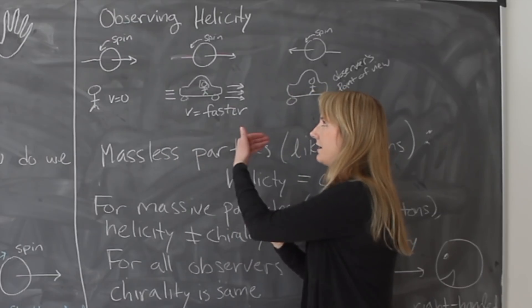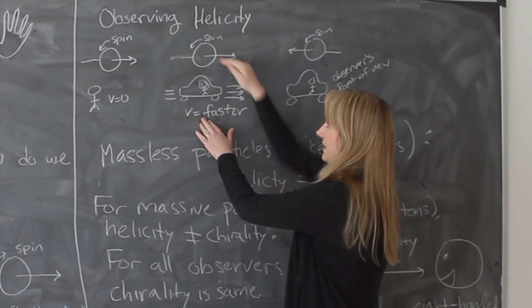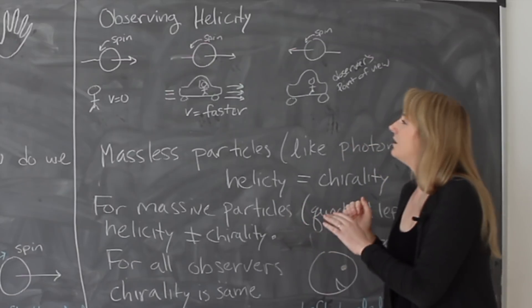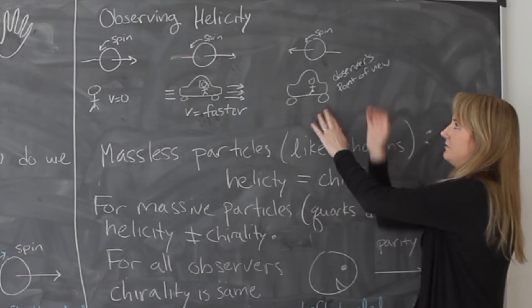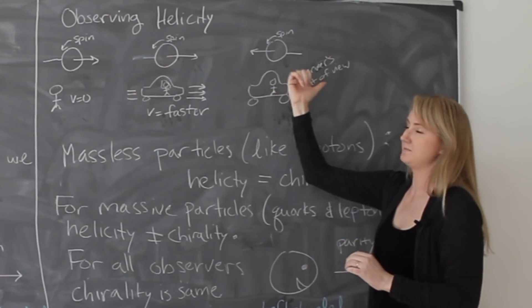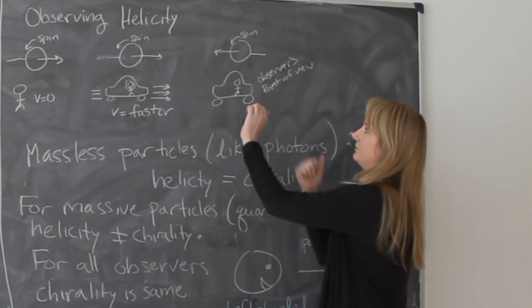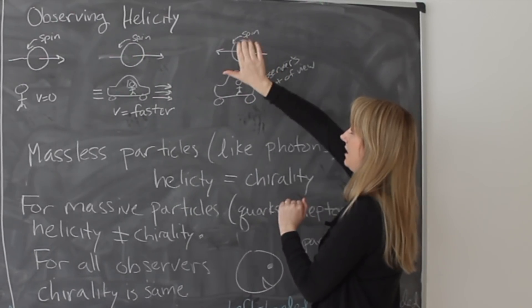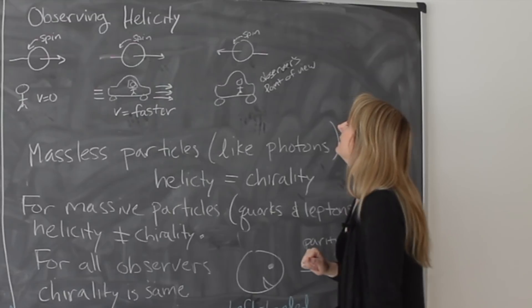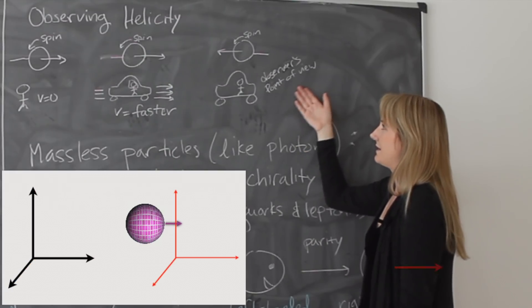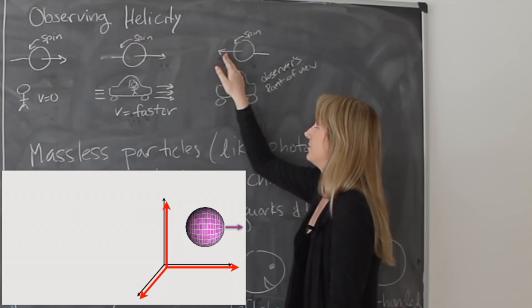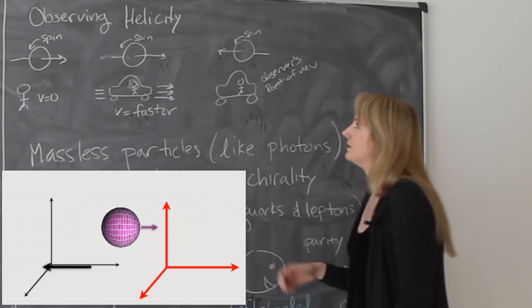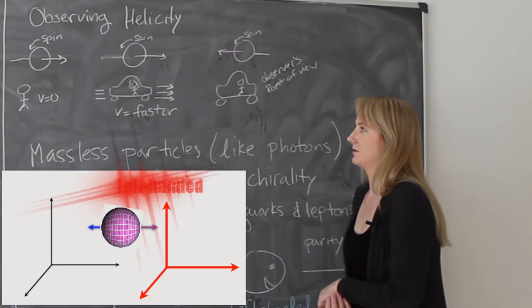But if I get in the car and I go faster than the particle, so now I'm moving faster than the particle. From my point of view, the particle is now moving this way, but its spin is still the same. So now it looks like a left-handed particle. And so the observer can actually flip the direction of the momentum depending on motion, but the spin stays the same. So the helicity changed for a massive particle.